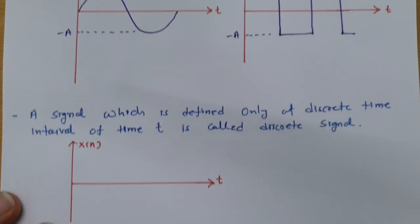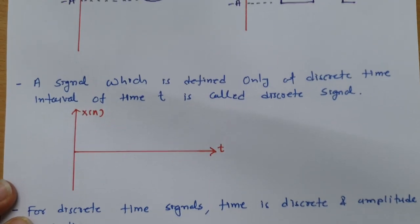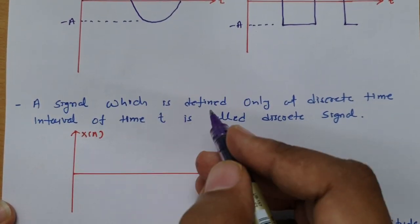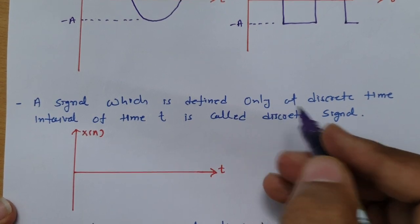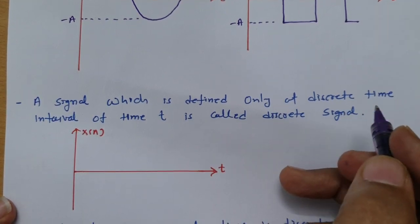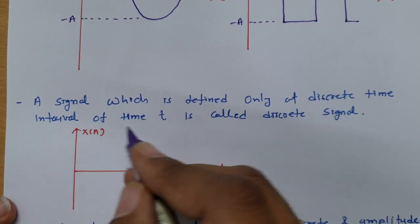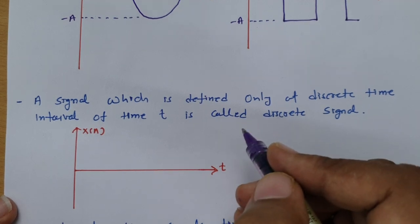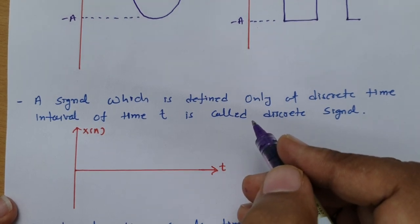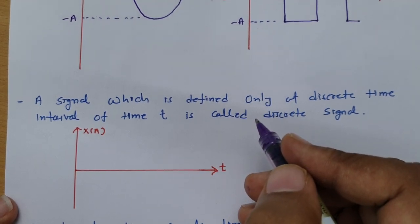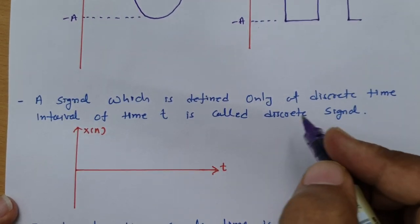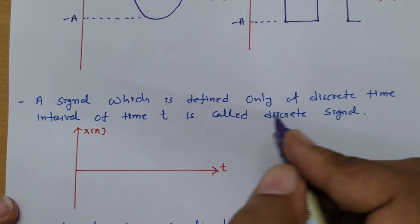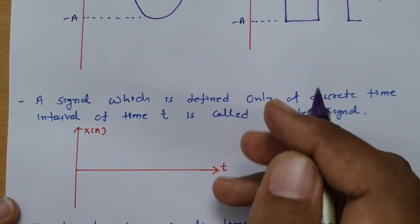Now let us see what a discrete signal is. A signal which is defined only at discrete time intervals is called a discrete signal. Whenever you have a signal which has values only at discrete intervals, that is what a discrete signal is.